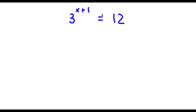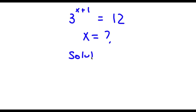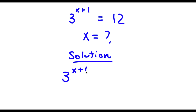Alright, so I have 3 to the power of x plus 1 is equal to 12. So I'm going to find the value of x here. For my solution, first start with 3 to the power of x plus 1 is equal to 12.